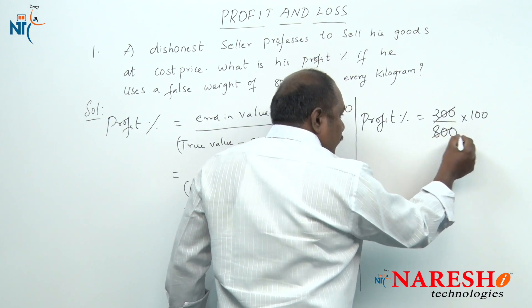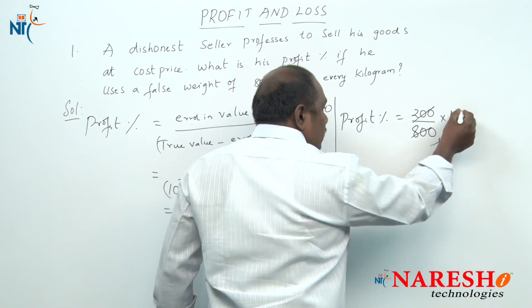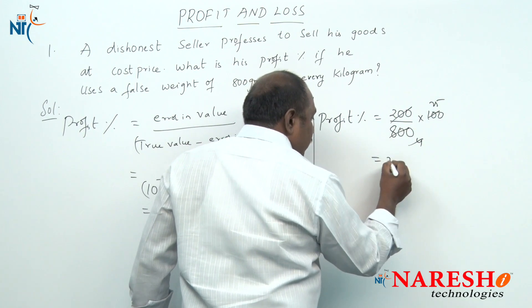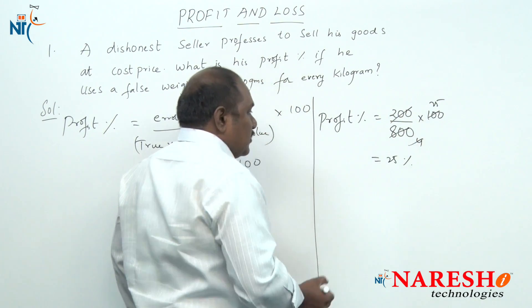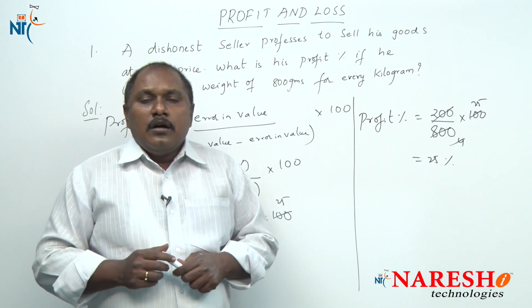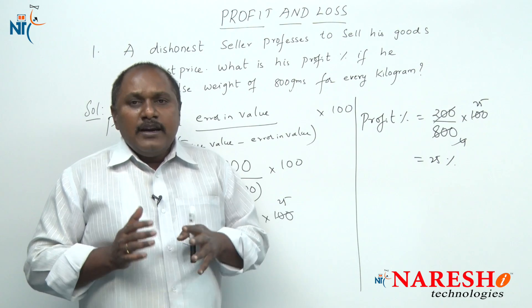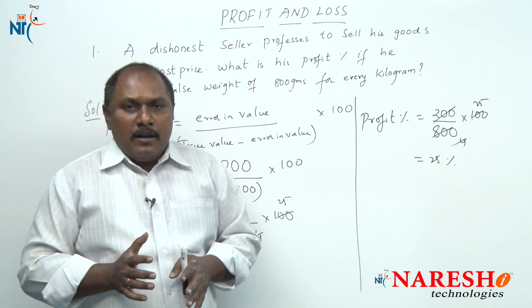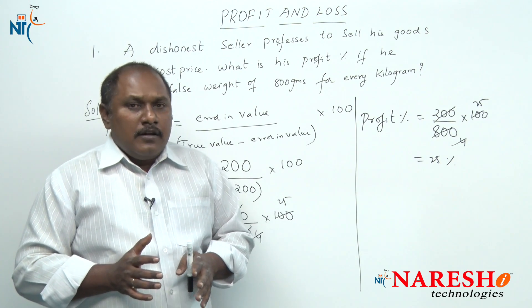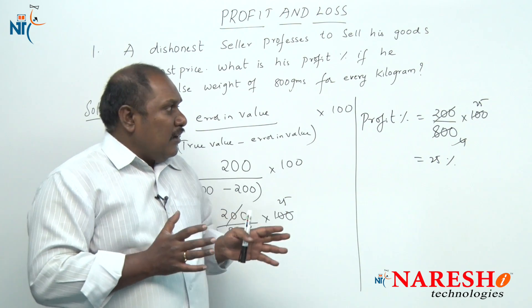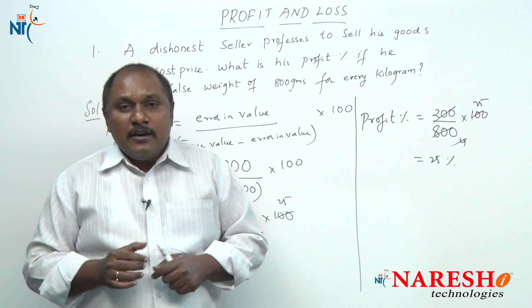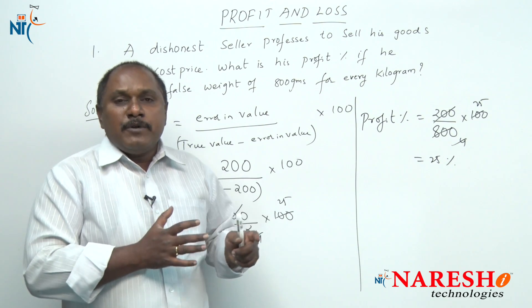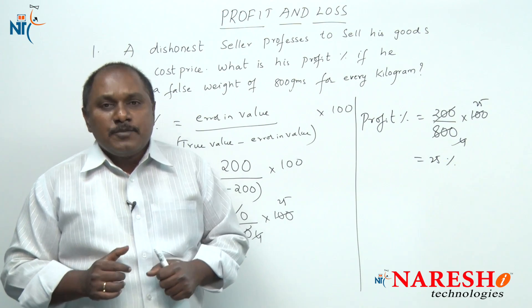So 200 / 800 × 100 = 25. The profit is 25 percent. Now let us look into one more example where quantity is involved in solving profit percentage and loss percentage.